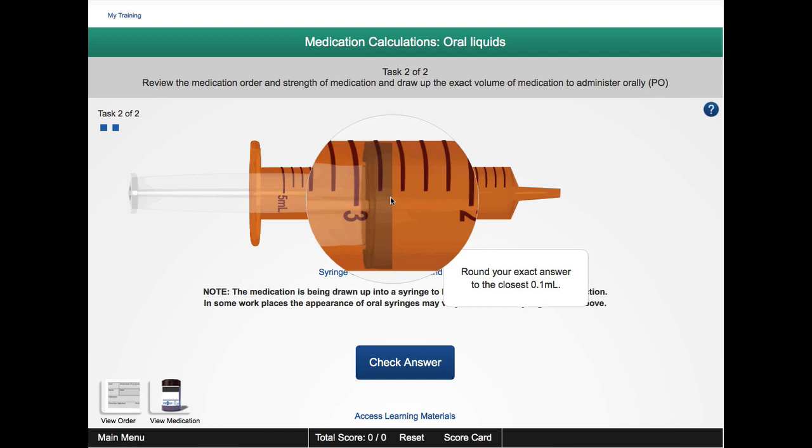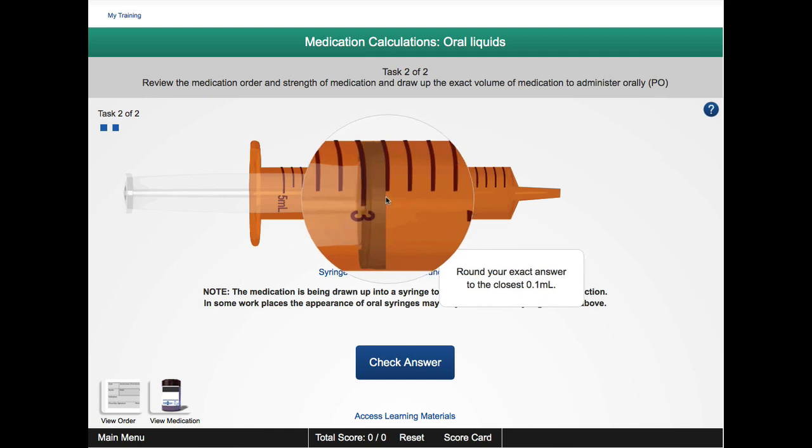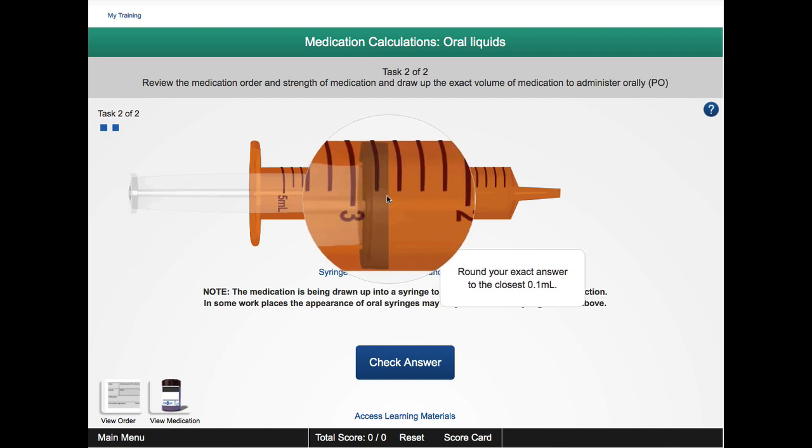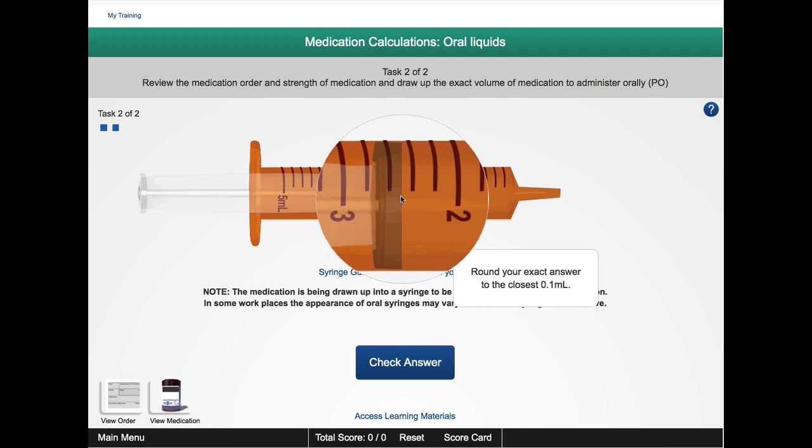However, the really important point you need to note is that as you move the plunger, you can actually move it in between those two black lines, which means you can essentially achieve 0.1 mil accuracy on the 5 mil syringe.